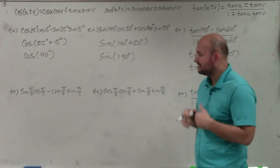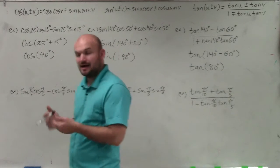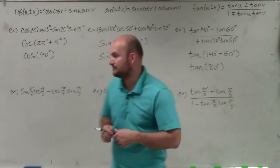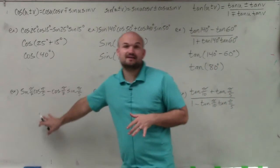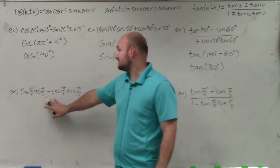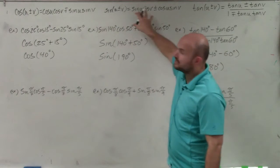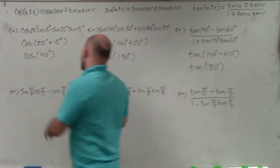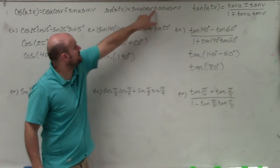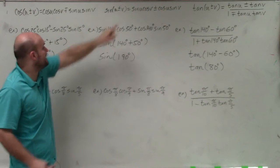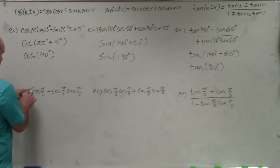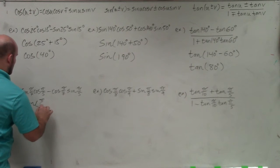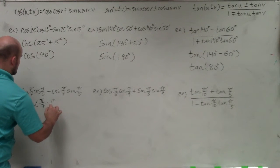When we get into radians, especially with fractions, things can get a little more difficult. Looking at this example, we want to identify the formula being applied. This is an example of the sum and difference formula for sine. We're subtracting between our two terms, which means it's the difference of the two angles. So our two angles are pi over 7 and pi over 5, giving us the sine of pi over 7 minus pi over 5.